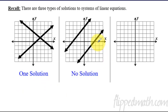So we could have one solution if the two lines cross. Or we could have no solution because maybe the lines are parallel and they never ever cross. So we'll see those today. Or if there was an infinite number of solutions. And that's just because the two equations represented actually the same line.